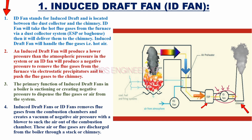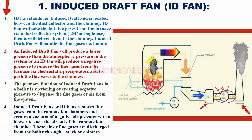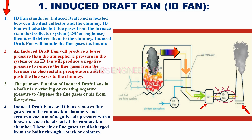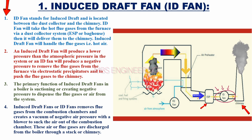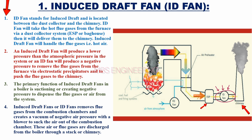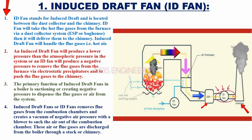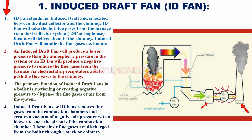The Induced Draft Fan will handle the hot flue gases. Please refer to the schematic layout — the ID Fan is located between the dust collector and the chimney, taking hot flue gases from the furnace via a dust collector system, ESP or bag house, then delivering them to the chimney.